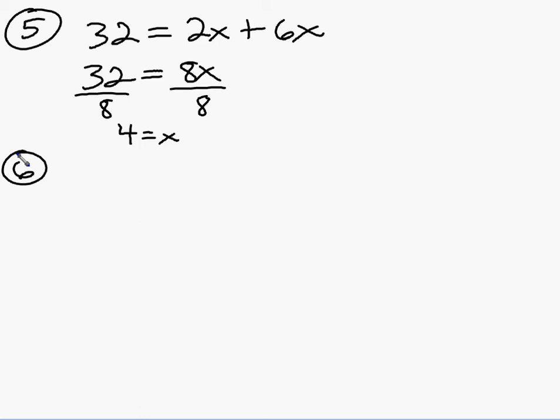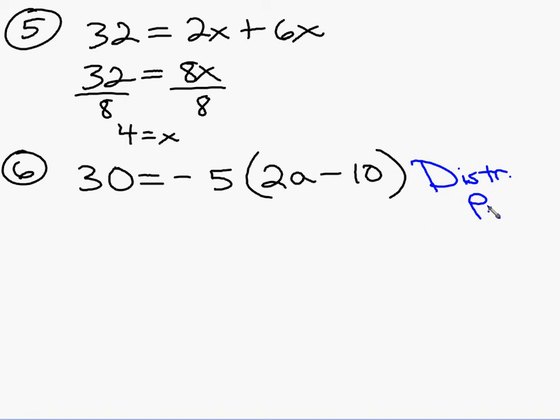How about this problem? Thirty equals negative five times two-A minus ten in parentheses. We are going to use distributive property first. I'm going to abbreviate, distributive property.